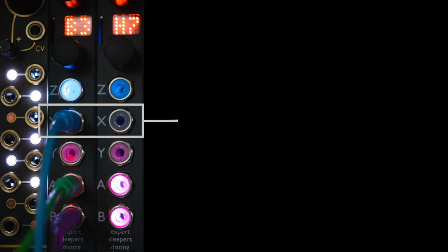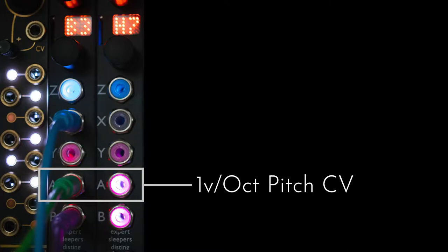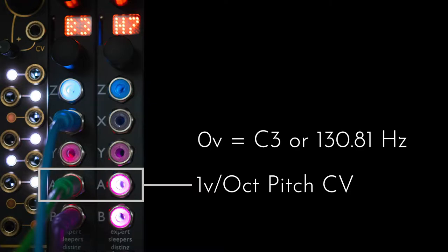In this mode, the X input on the Disting is the line input. The manual does not list functionality for the Y input, so unless there is something undocumented, I'm going to assume it does not have one. Output A is volt-per-octave pitch CV based on the incoming audio signal. According to the manual, zero volts is set to be C3, or approximately 130.81 hertz.